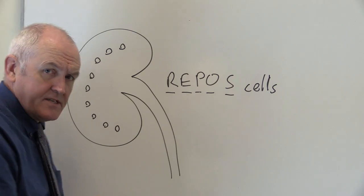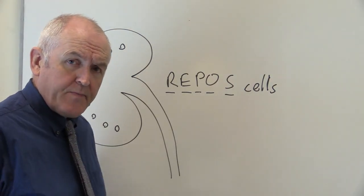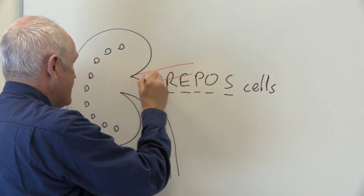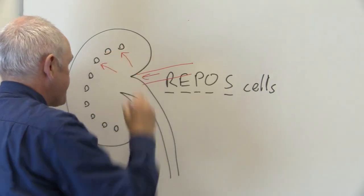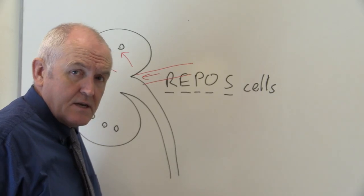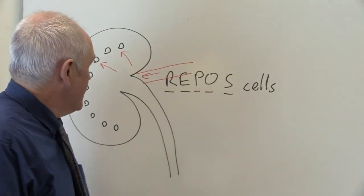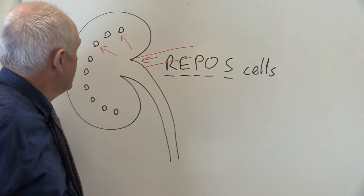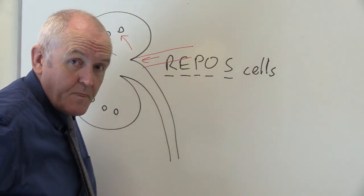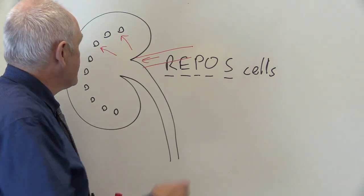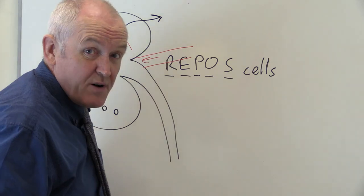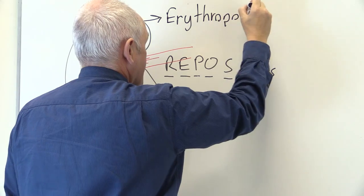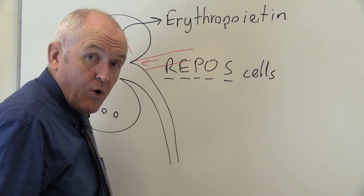Now these cells are sensitive to the amount of oxygen in the blood flowing through the kidney. So there's a good blood supply to the kidney in the renal artery. That blood is perfusing the kidney and these REPOS cells are detecting the amount of oxygen in that blood. Now if the oxygen levels as detected by the REPOS cells reduces, then these REPOS cells respond by producing erythropoietin, and this is a hormone.